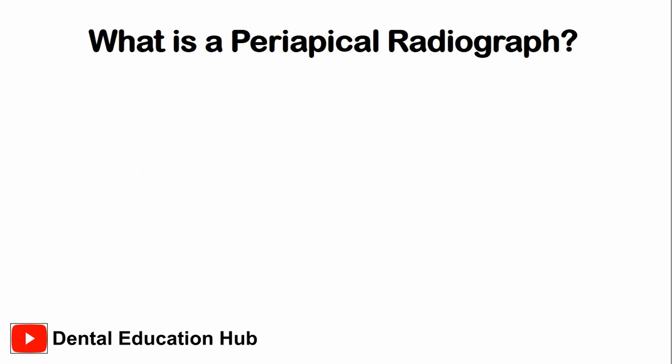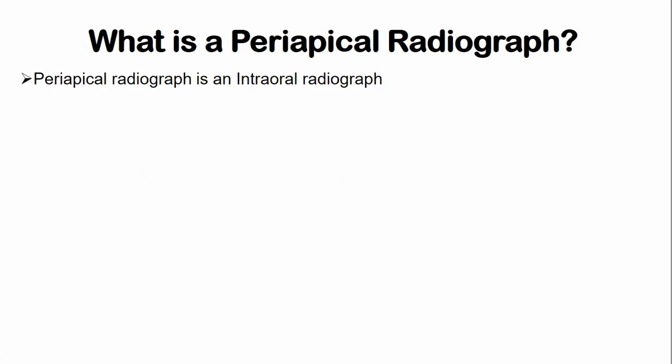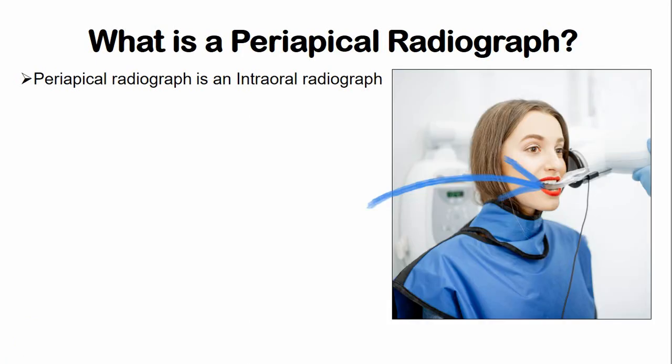So what is a periapical radiograph? A periapical radiograph is basically an intraoral radiograph, and by intraoral we mean that the image receptor or the film is placed inside the oral cavity of the patient.